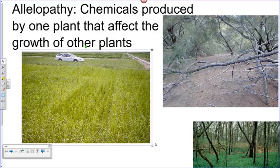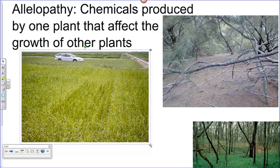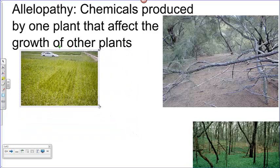Here's an example of a research project being done using allelopathy. You'll notice there's this field here, but there's this section in the middle that's kind of a darker green. The reason for this darker green is because this plant has been genetically modified, so it has DNA in it that causes it to produce chemicals that kill weeds. There are fewer weeds in this section of the field, and that's why it looks different. Scientists are interested in allelopathy to figure out if there are ways to get plants to produce their own chemicals so that we don't have to spray chemicals to keep other weeds from growing.